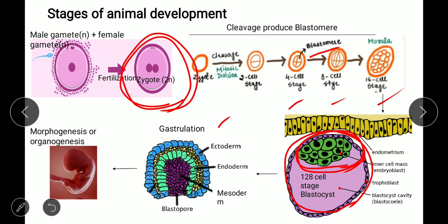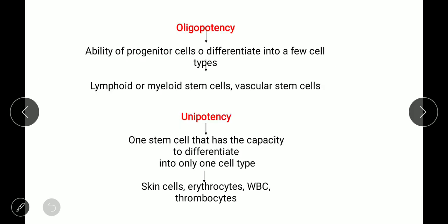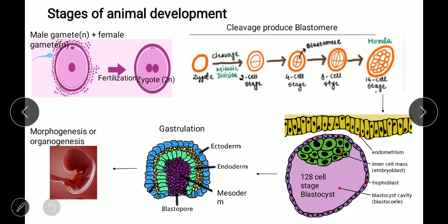After gastrulation, morphogenesis and organogenesis give rise to a whole organism. These are the stages of animal development. Cell potency and stages of animal development are very important topics — for example, pluripotency was tested in DBT October 2020 and GATE Life Sciences 2019. If you like this video, please click like and share with your friends.